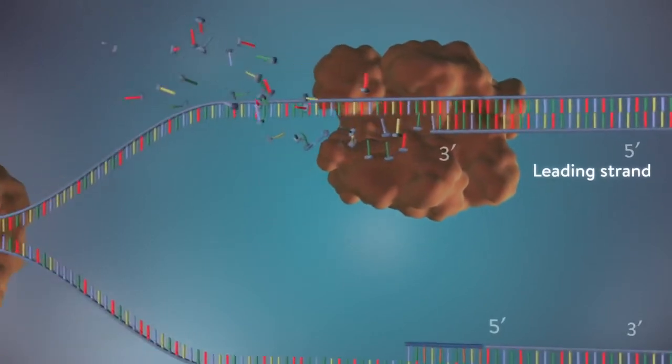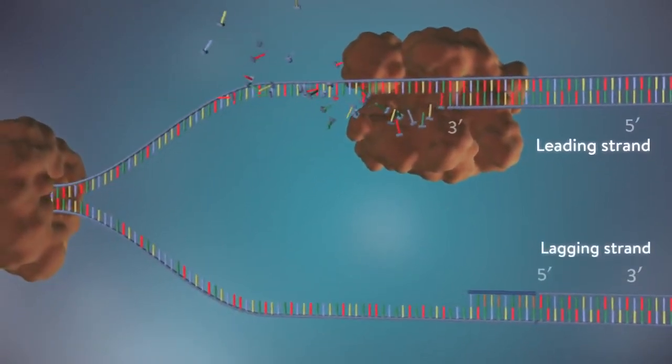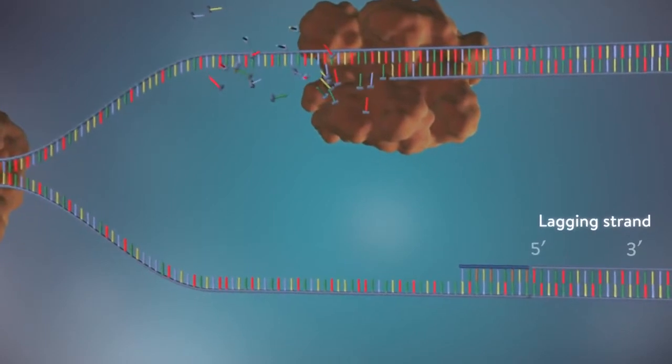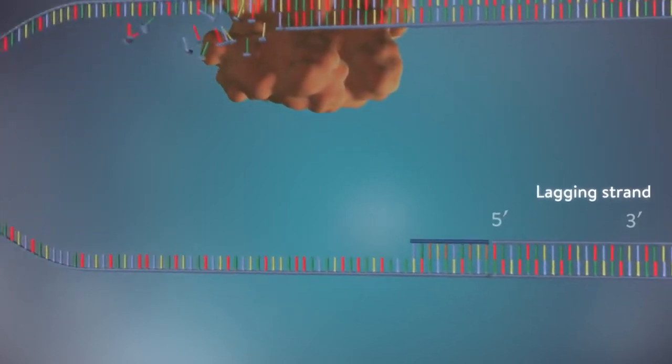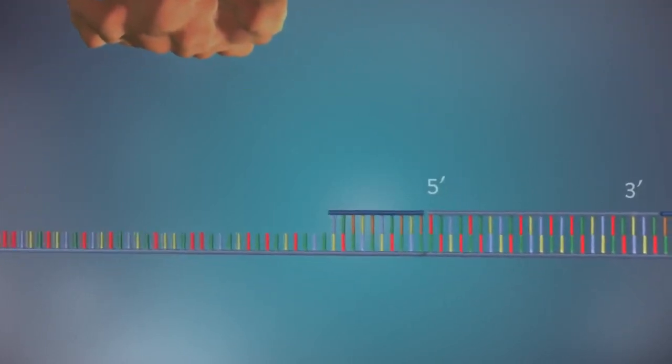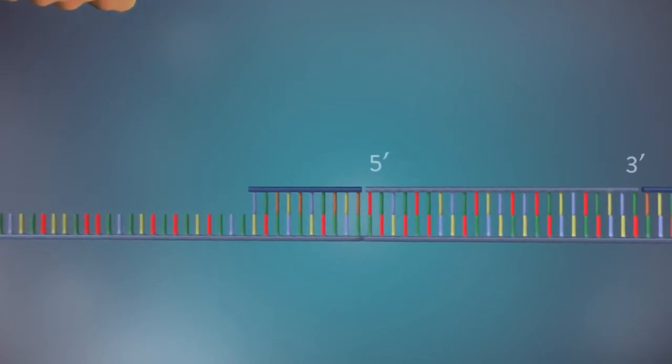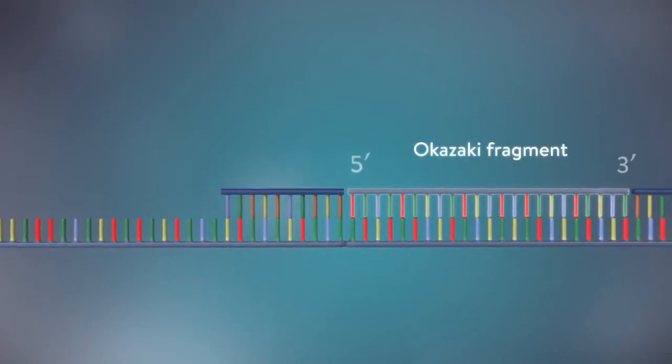The other strand, the lagging strand, cannot be made in this continuous way because it runs in the opposite direction. The DNA polymerase can therefore only make this strand in a series of small chunks called Okazaki fragments.